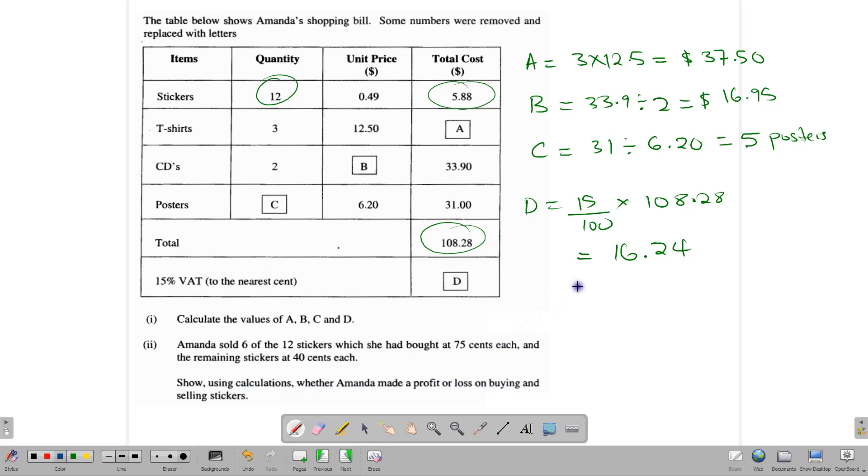So let's see how much money she gets for the stickers. She sells six at $0.75. Remember, $0.75 is written as $0.75. And when you multiply that out, six times $0.75, you end up with $4.50.